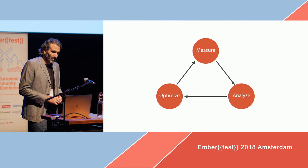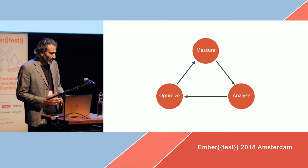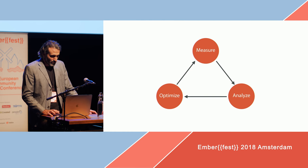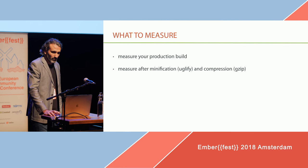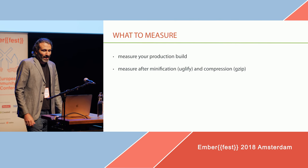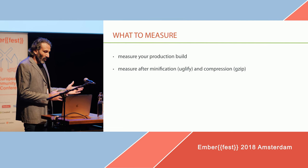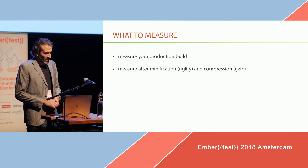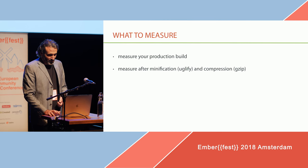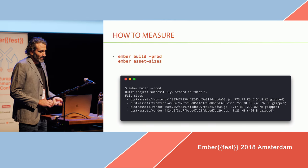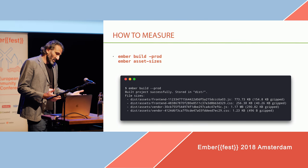You don't know if you have a problem if you don't continuously measure it. And if you can't analyze it, you don't know how to optimize it. So let's start with how and what to measure. It's important that you measure your production build, because that doesn't contain all the debugging stuff. It's also especially important that you do it after minification and compression, because comparing raw source code size is not very meaningful. GZIP is really good at removing redundancy in your code. If you do a production build, you basically get those numbers — even the GZIP numbers.